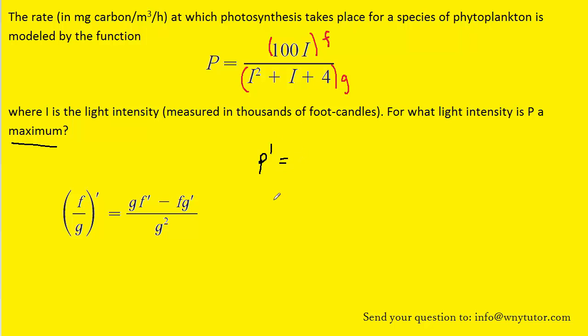So the derivative will be P prime equals g, which is the bottom function, multiplied by the derivative of f, which is the derivative of the top function. Now the derivative of 100I would just be 100, and then we have a minus.